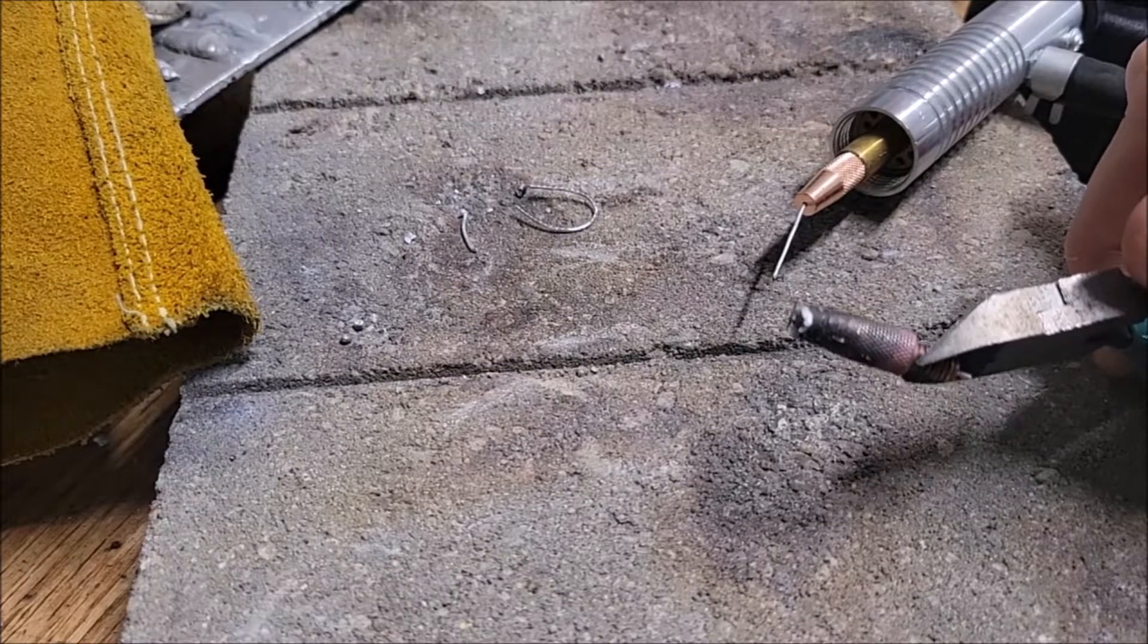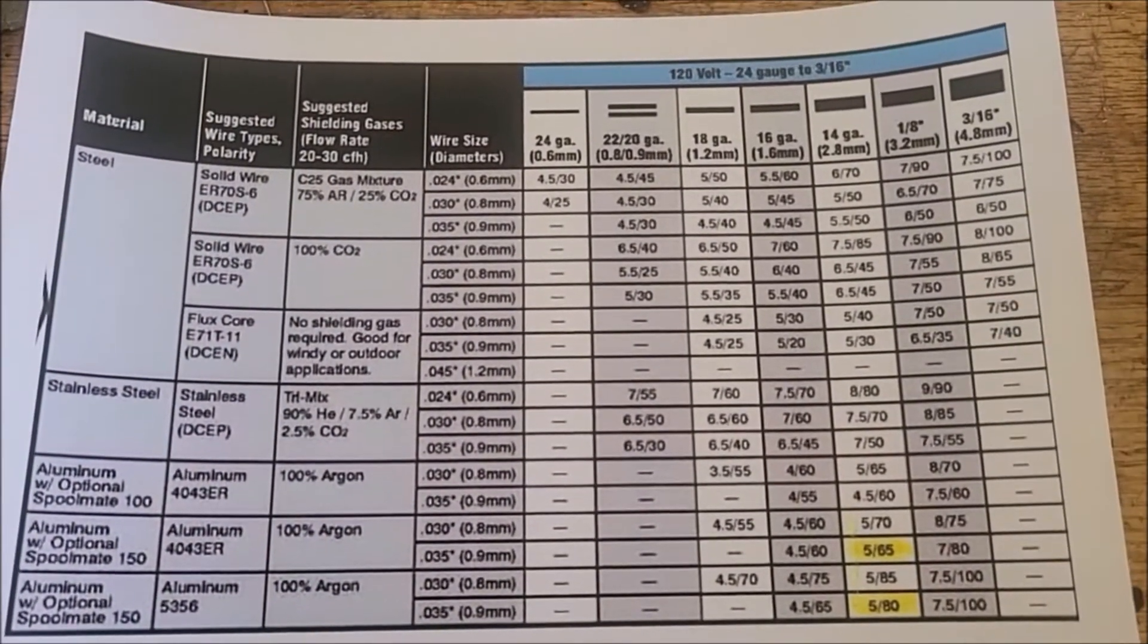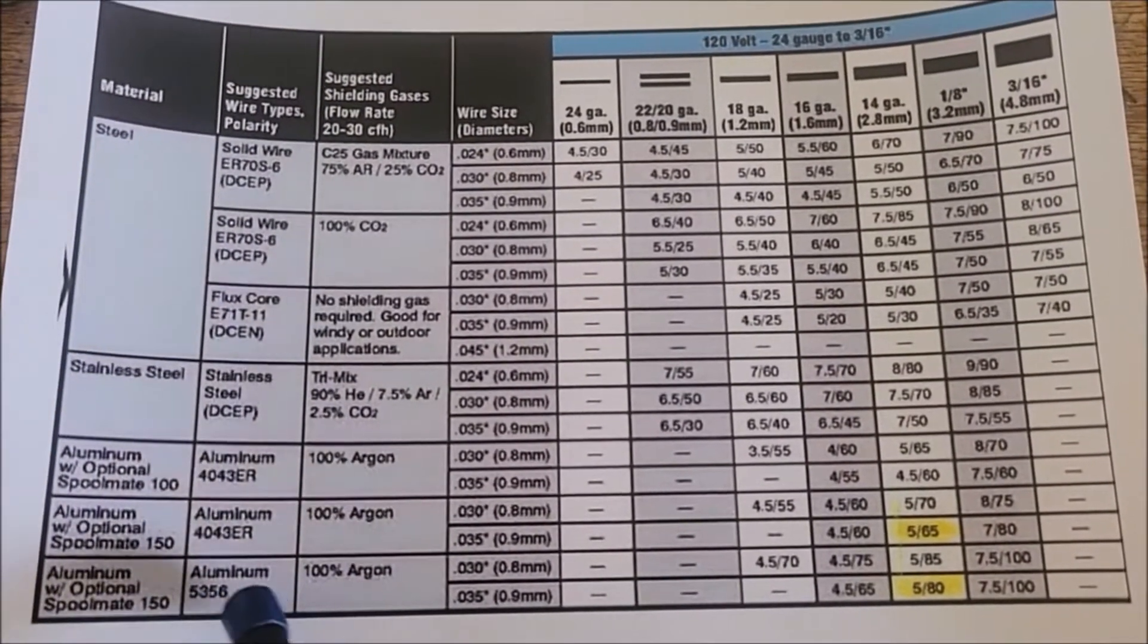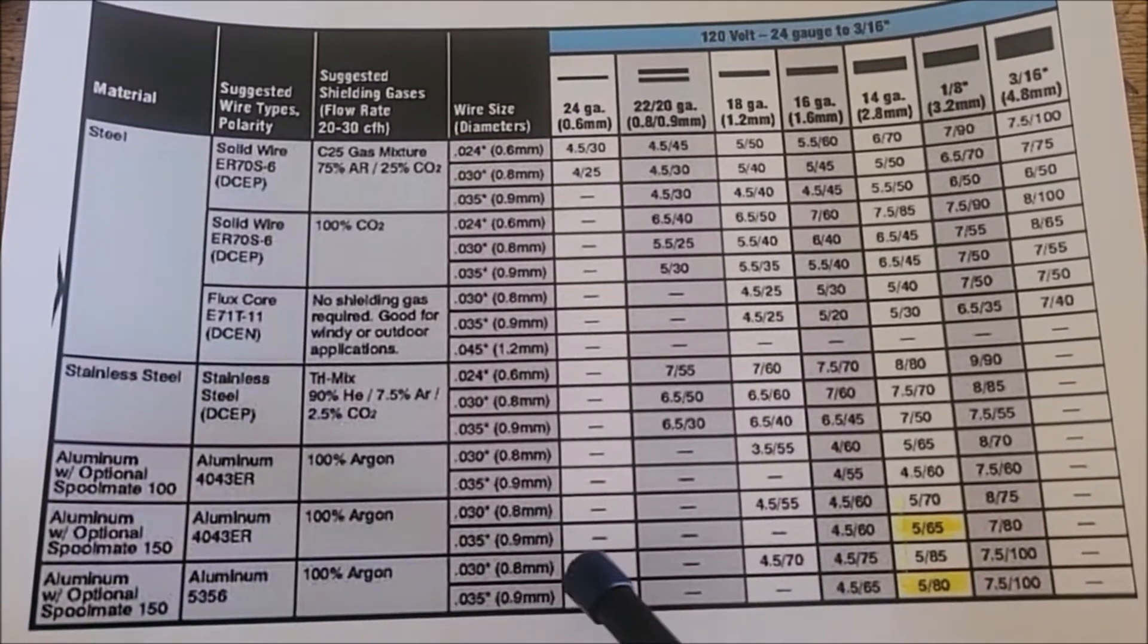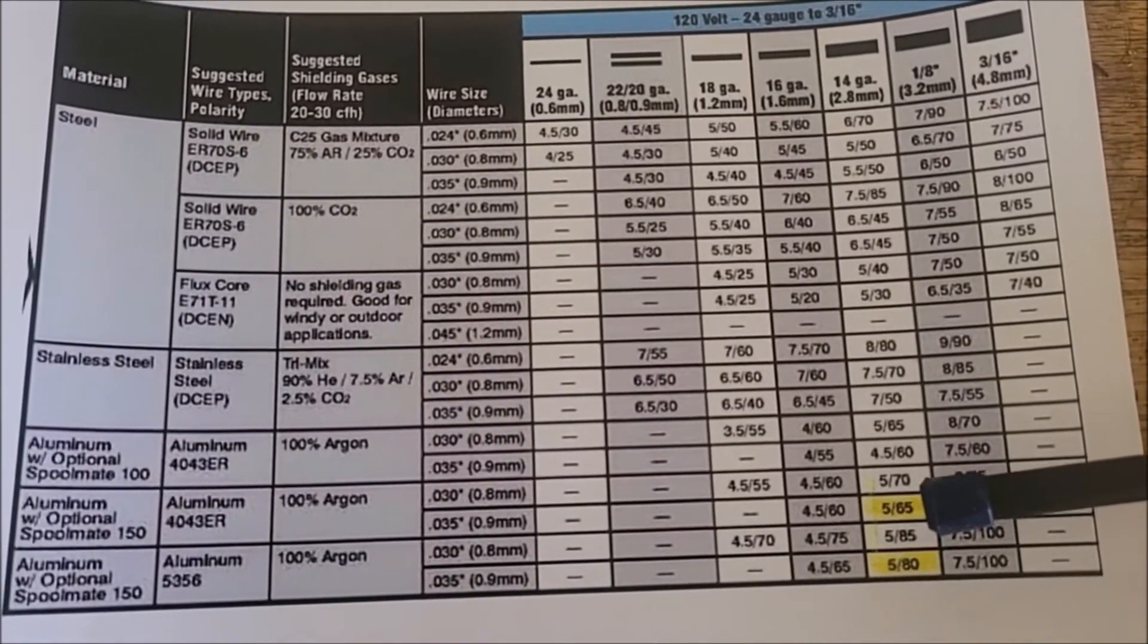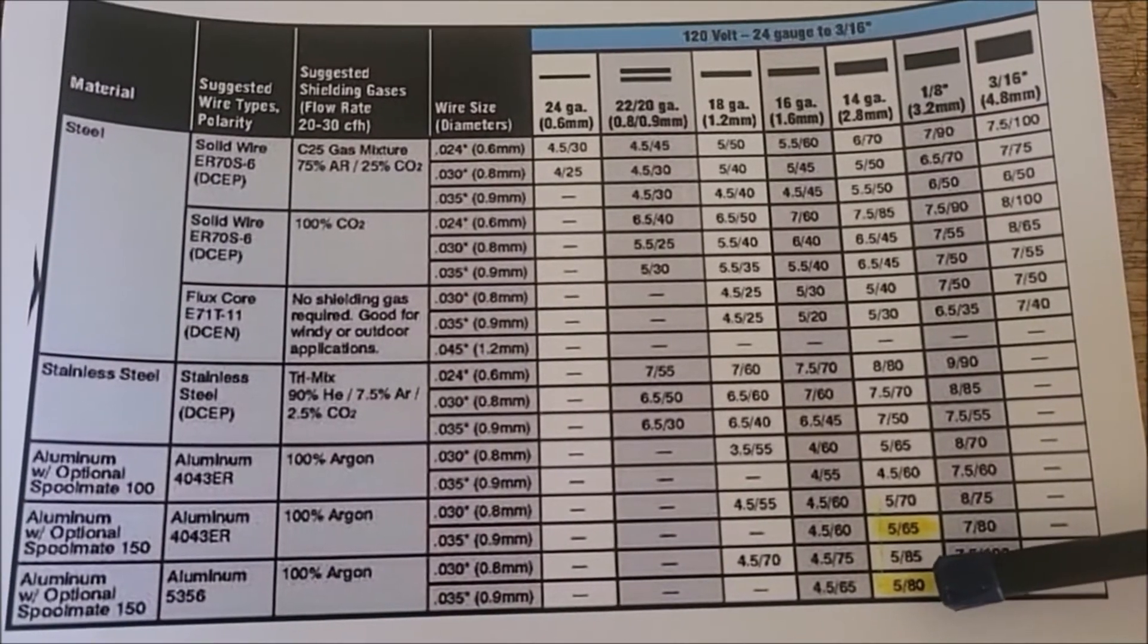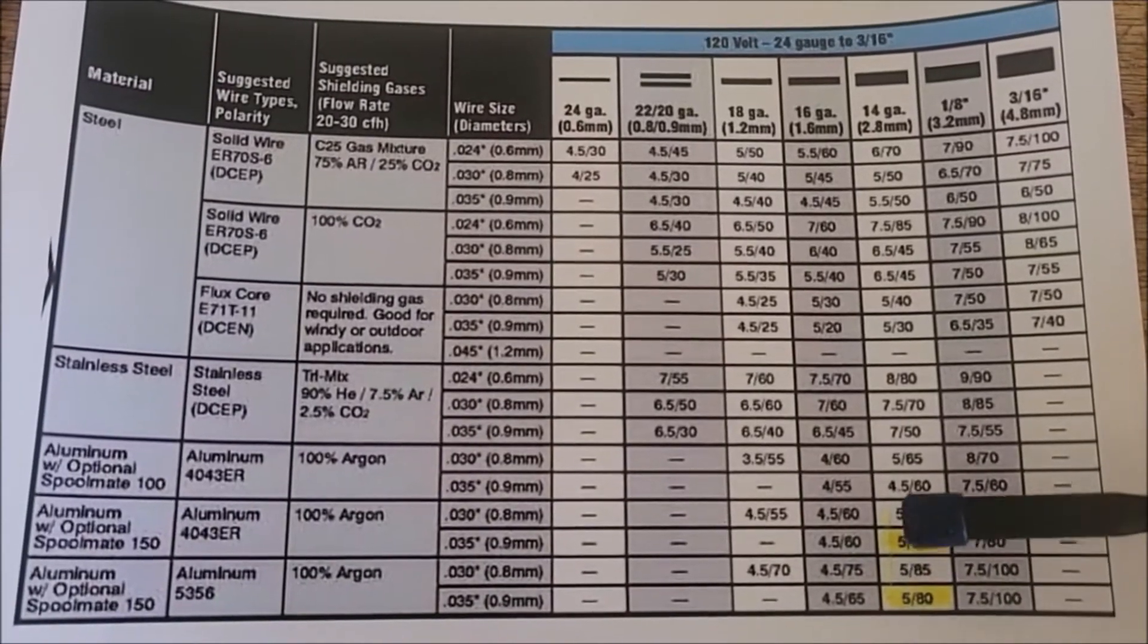Okay so this is the settings chart off of a different Miller welder than the one I have. I have the spool mate 100 but this one here shows with the 150 the 5356 and the 4043. When I look at the settings, this is 14 gauge, I noticed that when you go from a 4043 to a 5356 the speed increases, the wire feed speed needed, the voltage stays approximately the same.